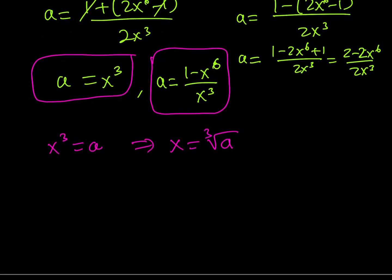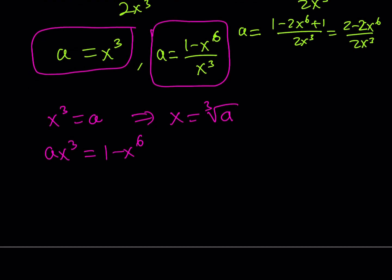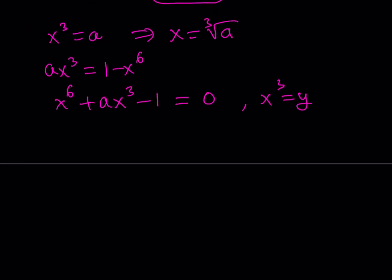For the second case, I can cross multiply, giving a times x cubed equals 1 minus x to the sixth. Putting the negative x to the sixth on the left-hand side, that looks like x to the sixth plus a times x to the third minus 1 equals zero. Obviously at the beginning you could have set x cubed equal to something and handled it as a quadratic directly, but we're going to do that at this point. I'd like to replace x cubed with another variable — let's call that y.